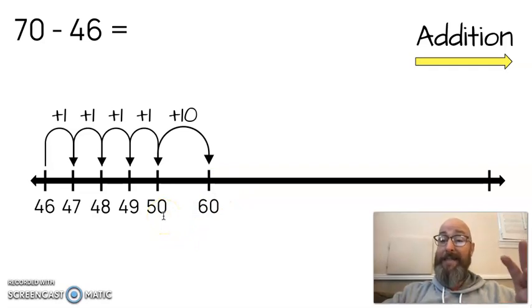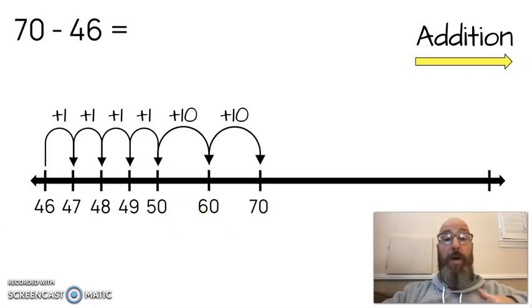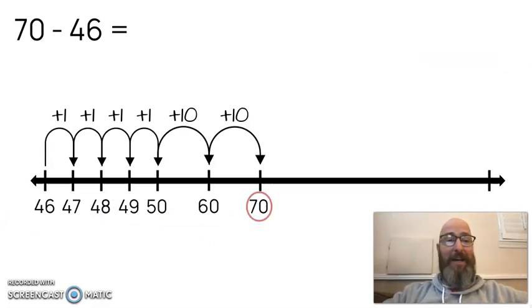Because we know if we're adding 10, 20, 30, 40, 50, 60, that's 1 more 10 up. 1 more 10 is 70. And again, that's our magic number.